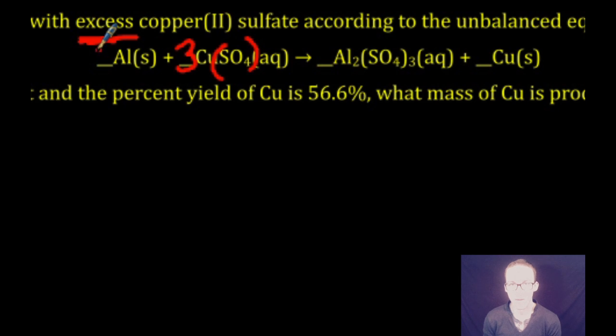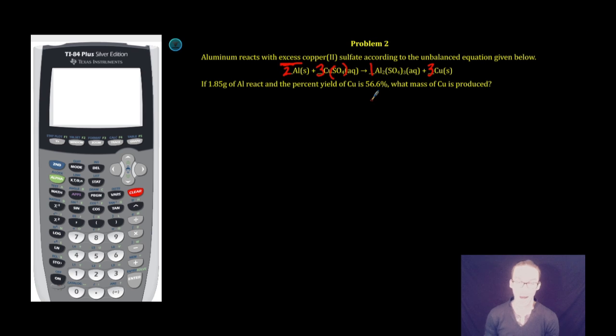To balance my aluminums, I need to put a coefficient of two here. And then to balance out my coppers, I need to put a three here. I'm going to write in the one, but it's not necessary. All right, now that we have a balanced chemical equation that shows us the relationships of all of our reactants and products,